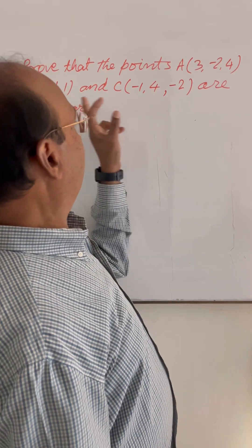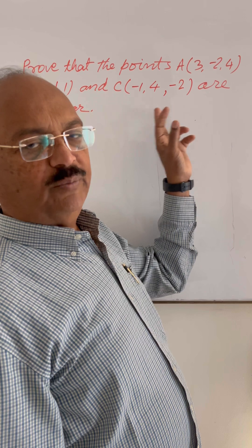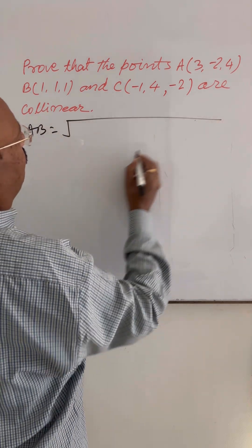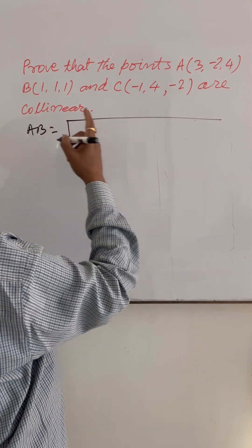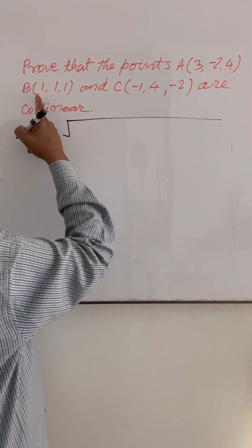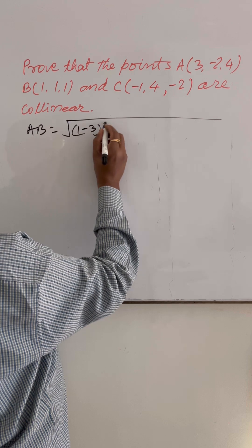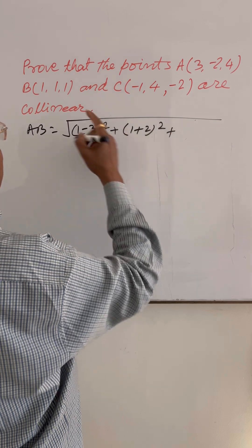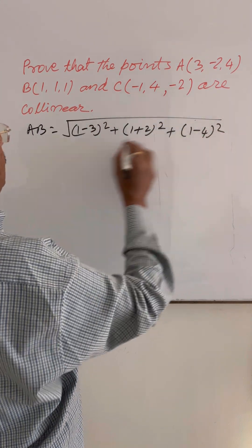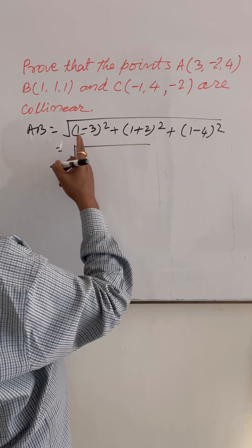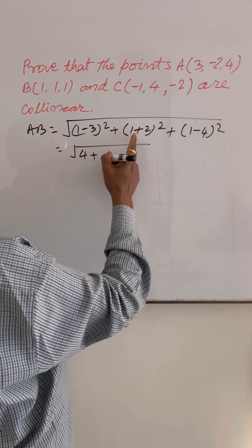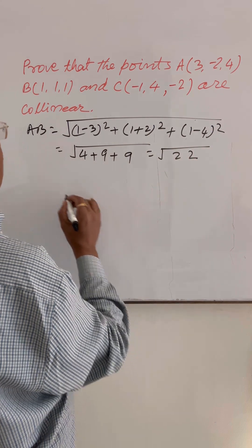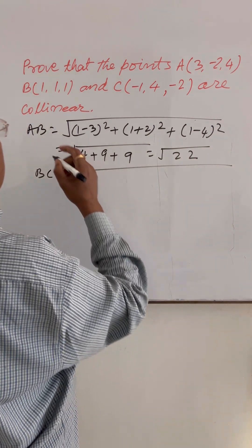We have to prove that the points A, B, and C are collinear. The coordinates of the points are given. Let us find AB using the distance formula: AB = √[(x2−x1)² + (y2−y1)² + (z2−z1)²]. With the given coordinates, this gives √[(−2)² + (3)² + (−3)²] = √[4 + 9 + 9] = √22.